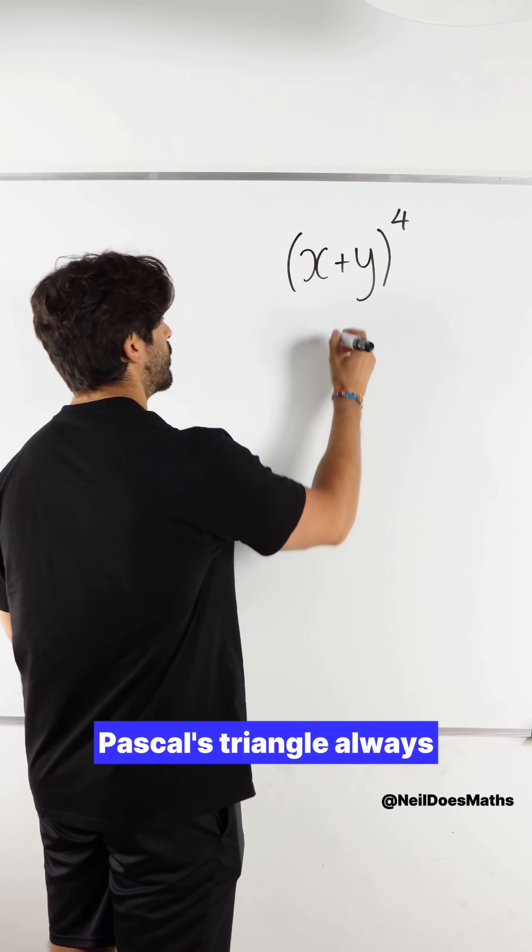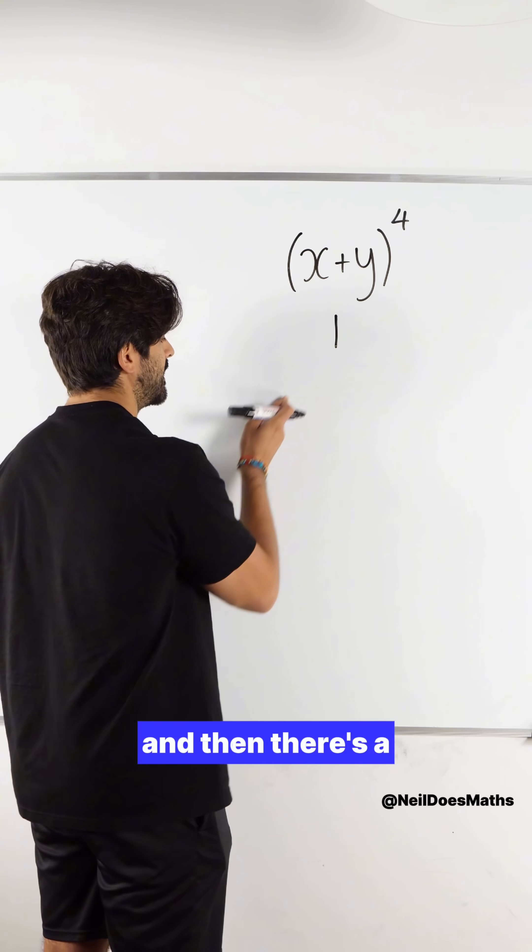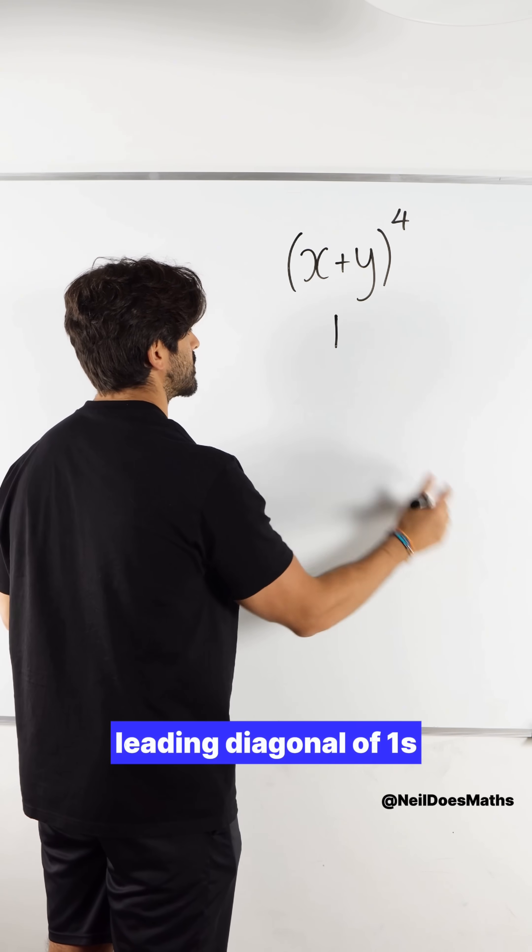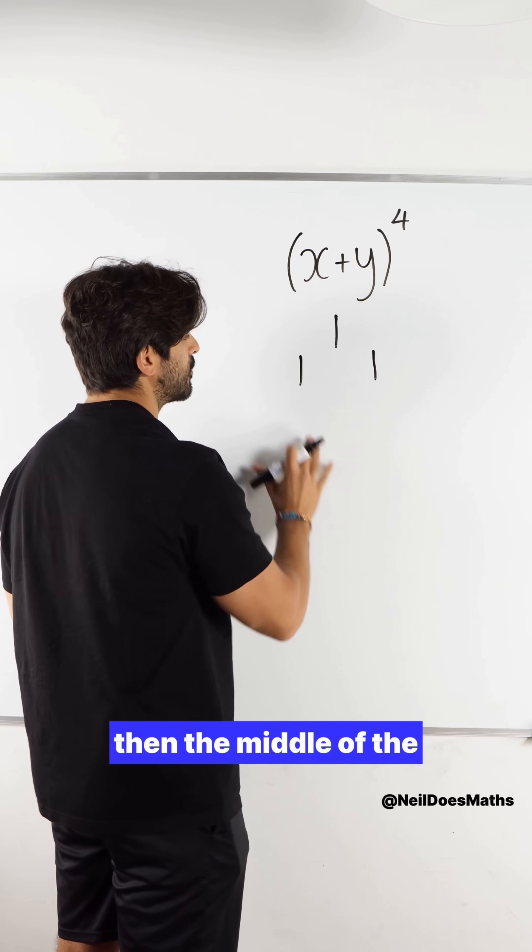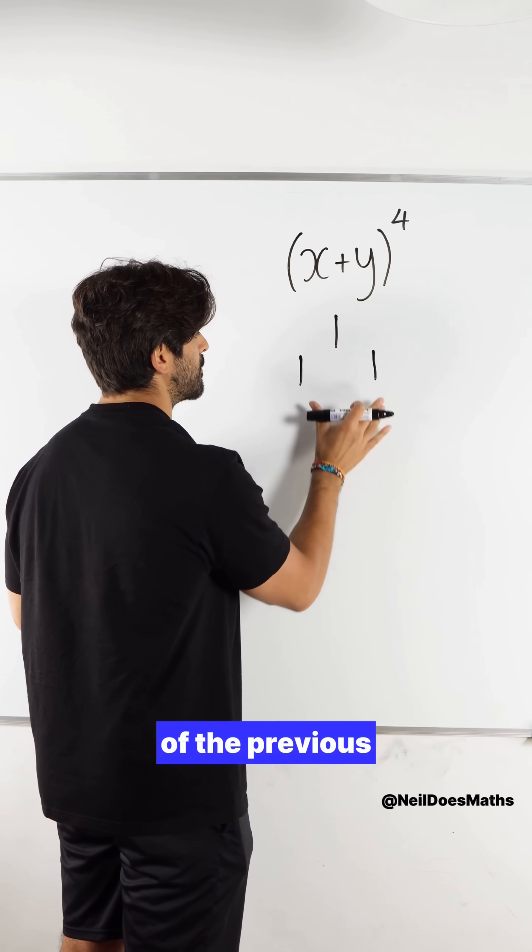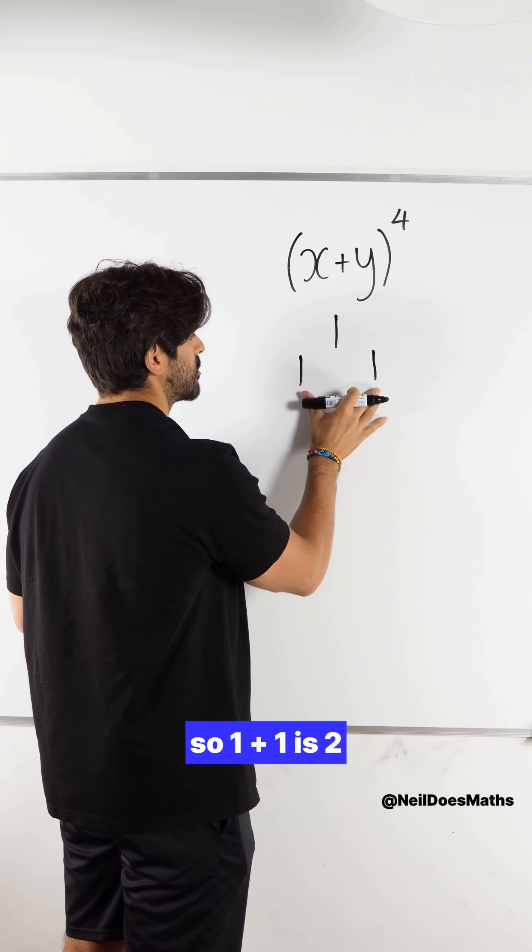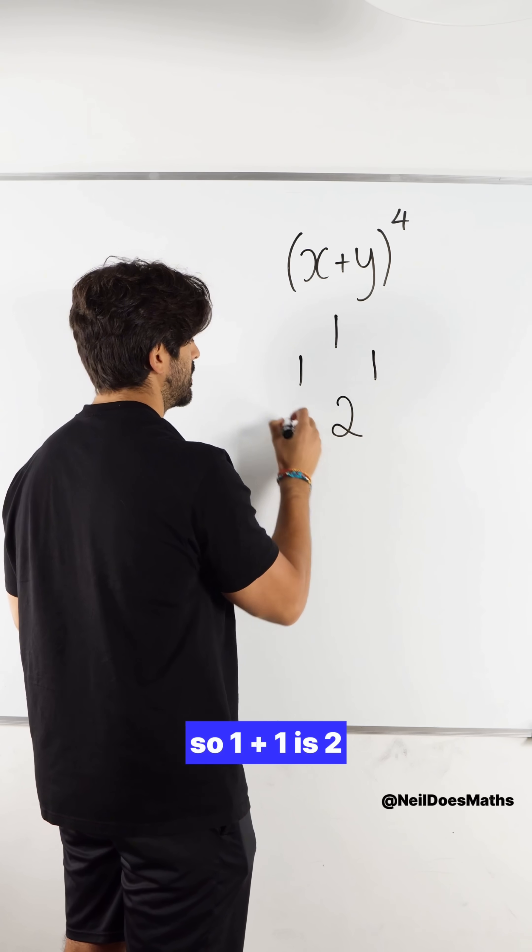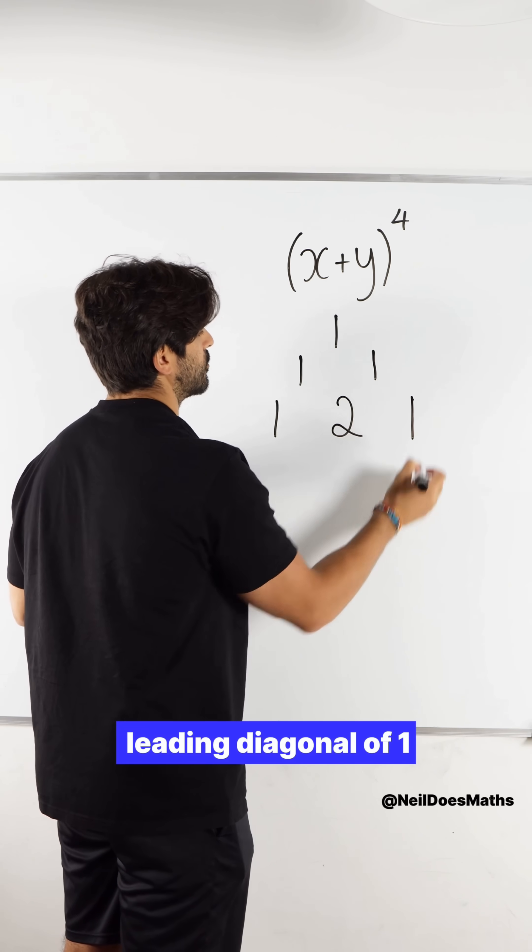Pascal's triangle always starts with 1 and then there's a leading diagonal of 1s. So we have 1, 1. Then the middle of the triangle is always the sum of the previous two numbers. So 1 plus 1 is 2.